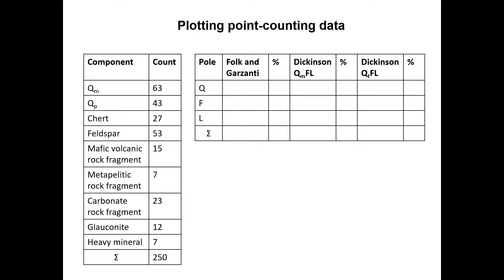This is because rock fragments, such as metapelites and mafic volcanic rock fragments, are often consisting of mineral phases smaller than 63 microns, so they are counted as lithic or as rock fragments in both cases.